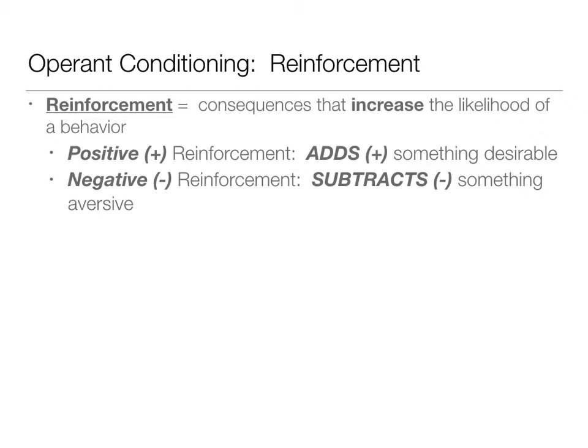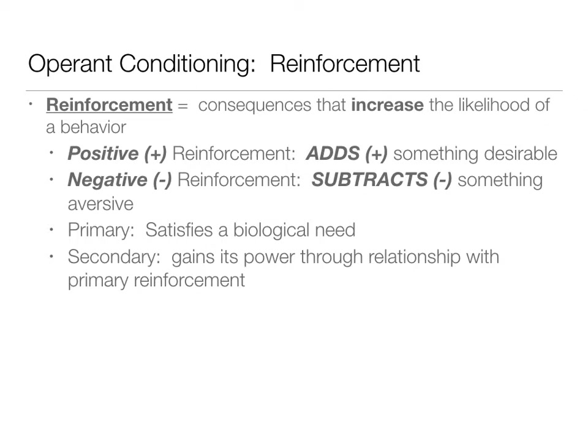Within reinforcement, we have primary reinforcers — things that satisfy a biological need, like food or water in the Skinner Box. Secondary reinforcers get their value through their relationship to a primary reinforcer. Money is the perfect example: the paper itself is useless, but its value lies in being able to trade it for something you really need or want. Sticker charts and tickets are also secondary reinforcers when they add up to something else.